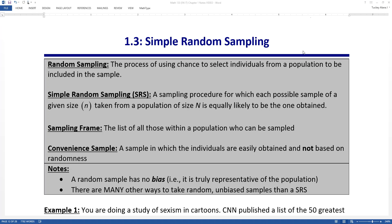The simplest one is called a simple random sample. A simple random sample is a sampling procedure for which each possible sample of a given size little n taken from a population size capital N is equally likely to be the one obtained. In other words, every sample of size 5, for example, is just as likely as any other sample of size 5 from the population size of 5,000 or something like that. Little n is the sample size, capital N is the population size.